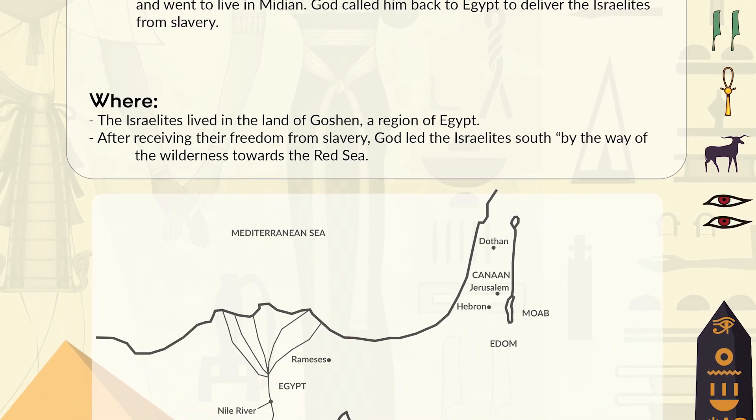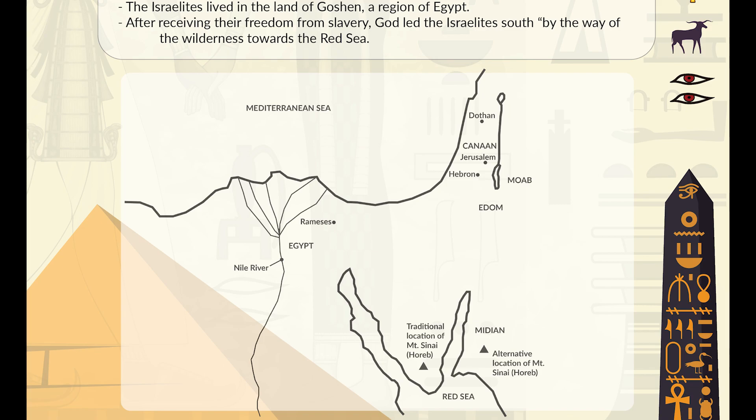Where did these events take place? The Israelites lived in a region of Egypt known as Goshen, but when they received their freedom from Egyptian slavery after God sent the 10th plague on Egypt, they went from a place called Ramses to Succoth. Then God led them south by the way of the wilderness towards the Red Sea, which you can see down there in the bottom of the map.